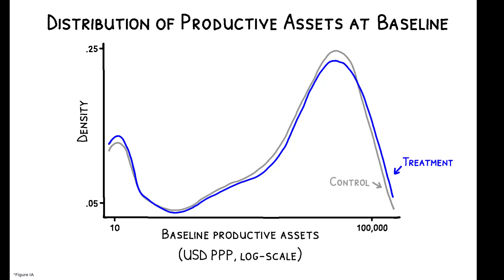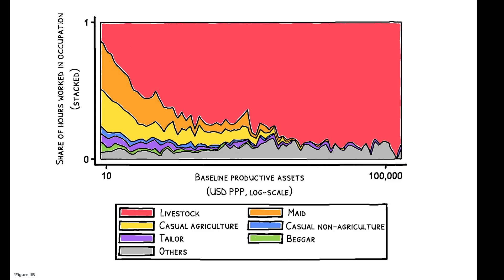Those at the bottom own mostly poultry and goats, while those at the top own more expensive assets, namely livestock and land. These differences in asset ownership give rise to differences in occupation. Wealthier households use their assets to engage in livestock rearing and land cultivation, while the poor engage in low-earning casual wage labor, which doesn't require assets.